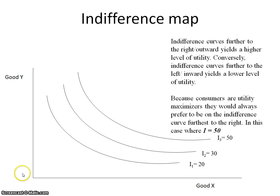In this indifference map, we have three possible indifference curves for this particular consumer: I1, I2, I3. I1 yields a value of utility of 20, I2 yields a utility of 30, and I3 yields a utility of 50.